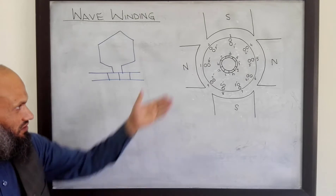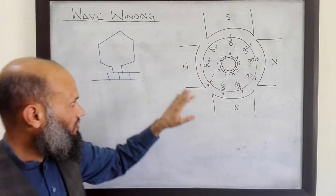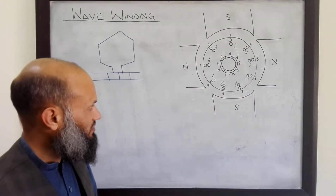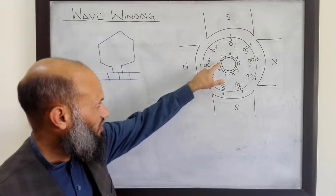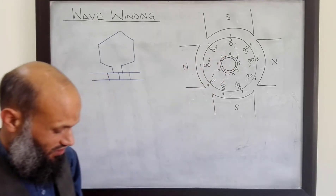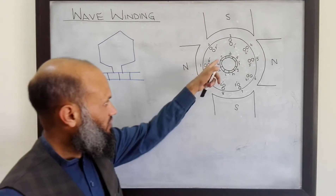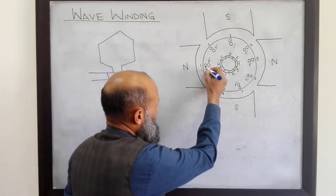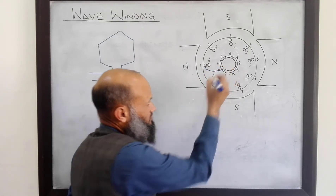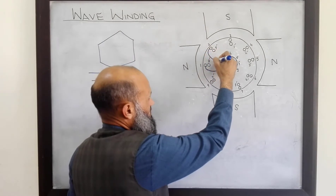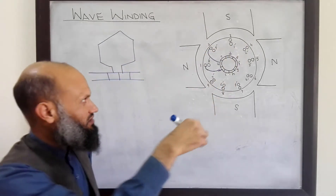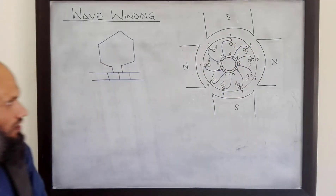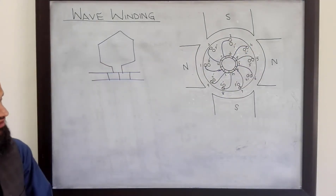To elaborate it, let's consider this machine. It has four poles and there are nine coils placed over here. Corresponding to these nine coils, we have nine commutator segments. The connection of the coils with commutator segments is like this one. One is connected to commutator segment A, two is connected to B, three is connected to C, and so on. I have connected one side of each coil.